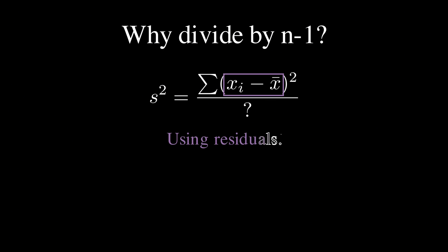So why does this matter for variance? Well, when we calculate sample variance, we're using the squared residuals from the sample mean, not the true population mean.